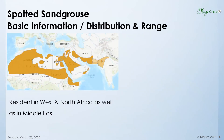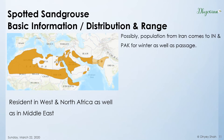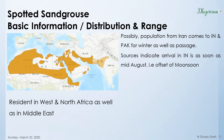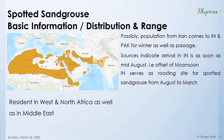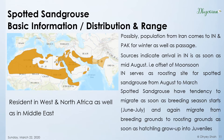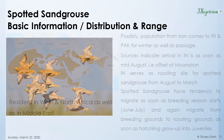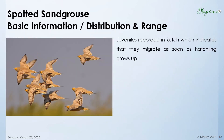Moving on to its distribution and range. As you can see on this map, it is resident in West and North Africa as well as the Middle East, which also includes Iran. This Iran population might come to India and Pakistan in winter as well as on passage. Sources show they come as soon as August, meaning as soon as the monsoon season ends. India serves as a roosting site for spotted sand grouse from August to March. They tend to migrate as soon as their breeding season starts — June to July — and migrate again once the hatchlings grow up. Juveniles have been recorded in Kutch, indicating they migrate as soon as the hatchlings are grown.